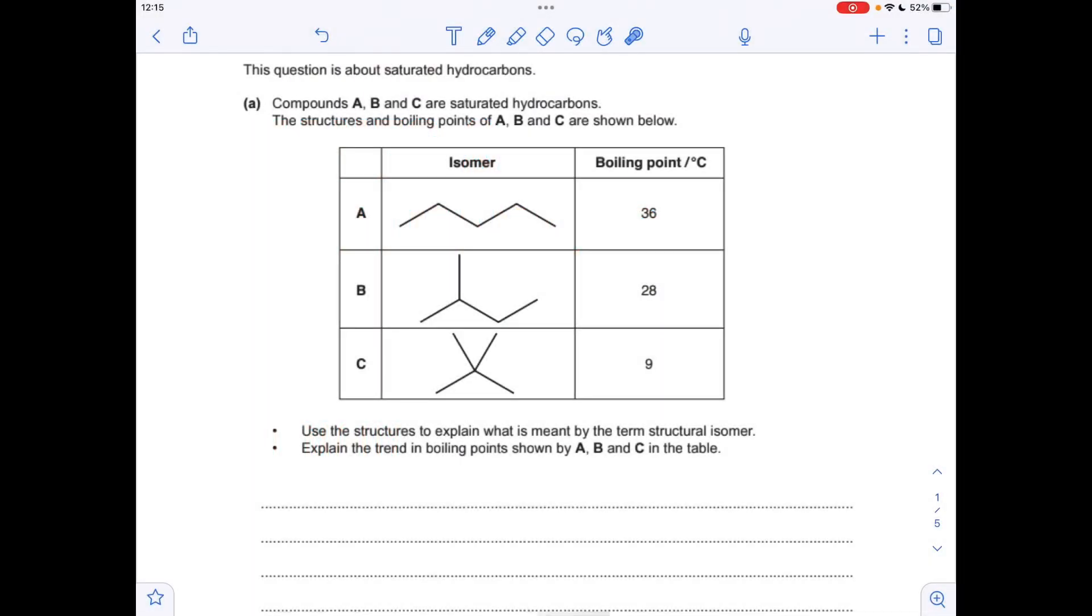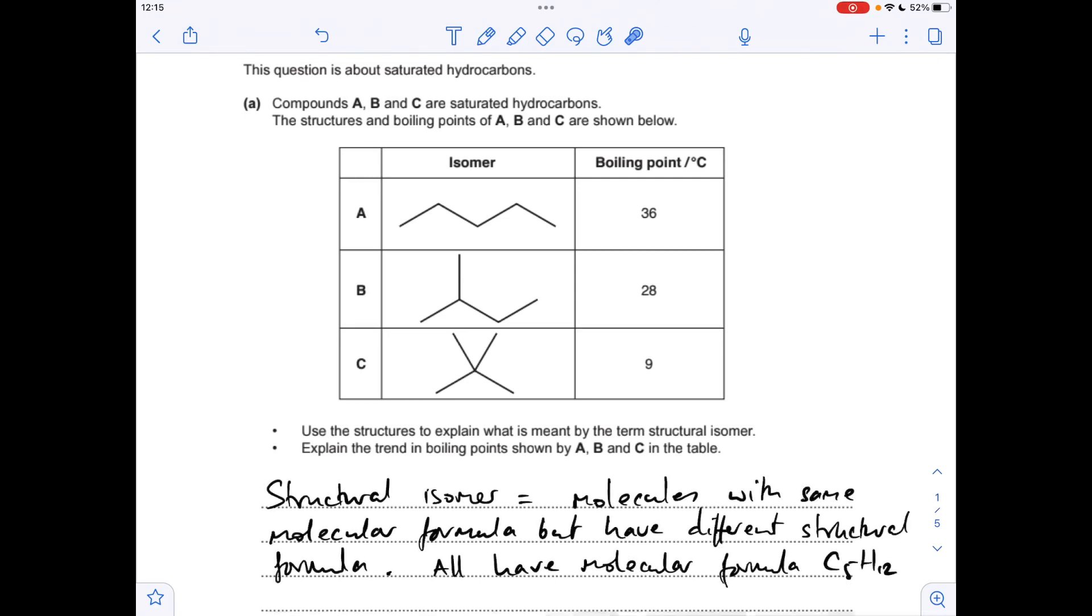The first thing we'll do is explain what's meant by the term structural isomer, and then link it to these three hydrocarbons. The definition of a structural isomer: molecules with the same molecular formula but they have different structural formula. Why are these all structural isomers? Because they've all got the molecular formula C5H12. Obviously, the structural formula is different.